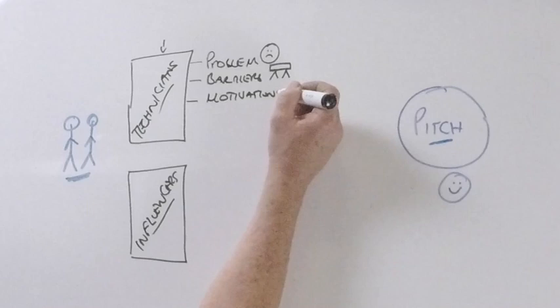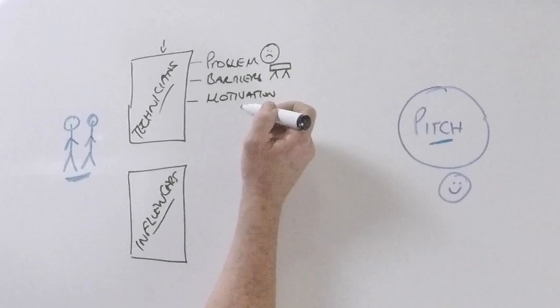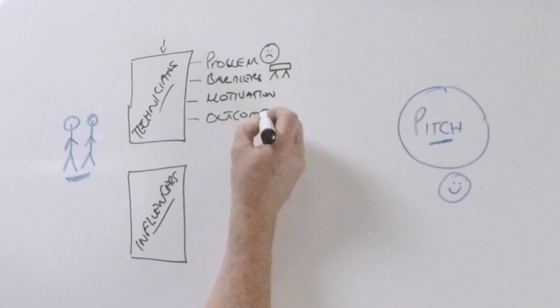The third thing we ask about is the motivation for solving that problem, and this alludes to the hook or the reason why they would be interested in your solution ultimately, which is going to solve that problem. Third thing, fourth thing, sorry, the outcome, the end result, what is it you want to produce?